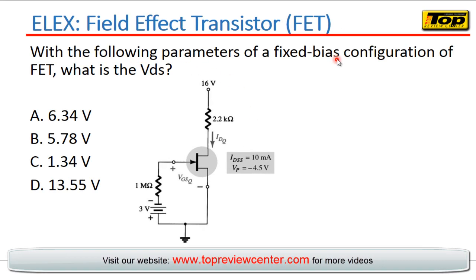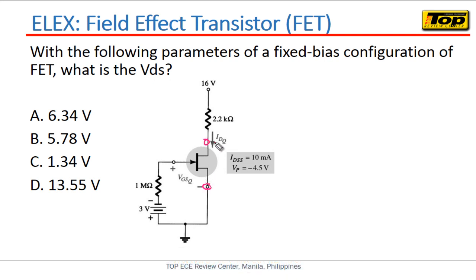Now here is the problem: with the following parameters of a fixed-bias configuration of FET, what is the VDS? So ang pinapahanap sa atin dito ay yung voltage across the drain and across the source. This is our drain and this is our source. The voltage drop across this is what is being asked. The VDS - kompleto naman yung parameters natin. We have a 16 volts here of VDD, you have the RD here, you have the IDQ, may VGSQ din tayo.